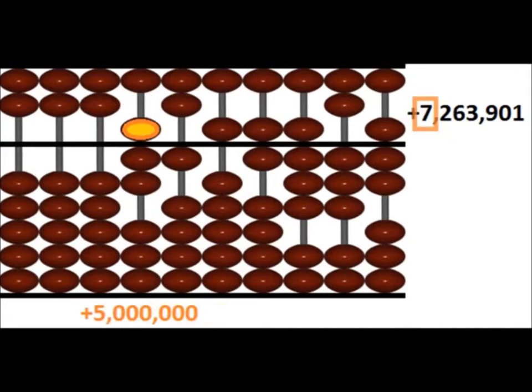Lastly, in the millions column, we push down 1 heaven bead, and push up 2 earth beads in total, giving us 7.